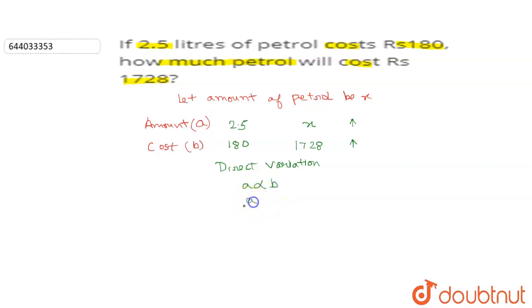So in this question we can take these two data, the ratio of these two data as 2.5 divided by 180 and that is equal to x by 1728.